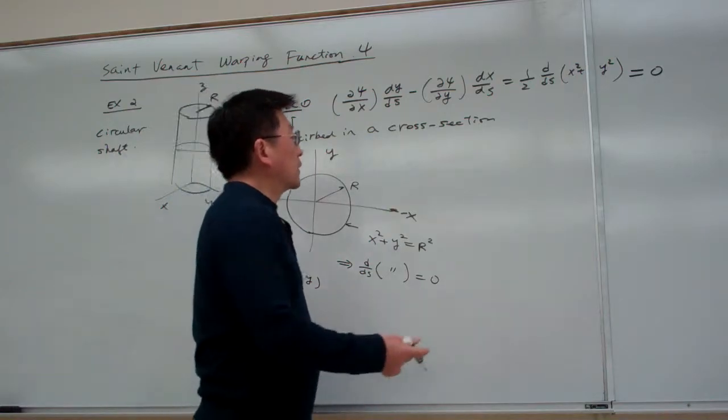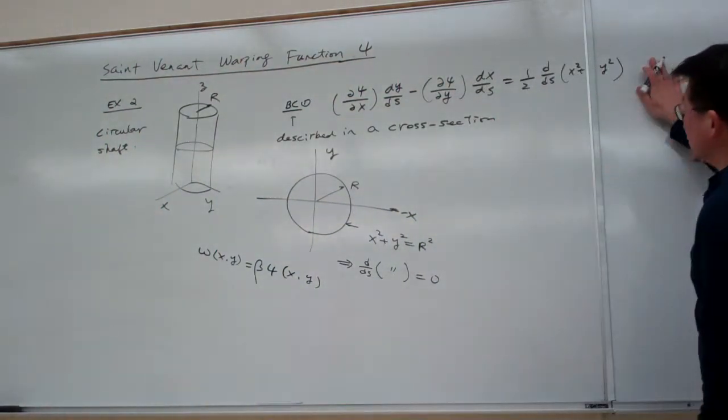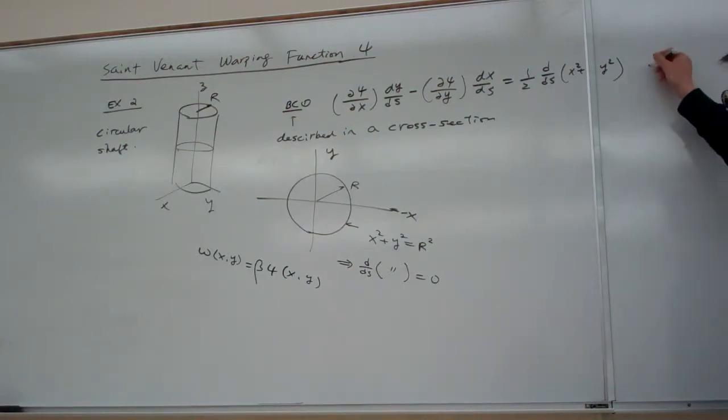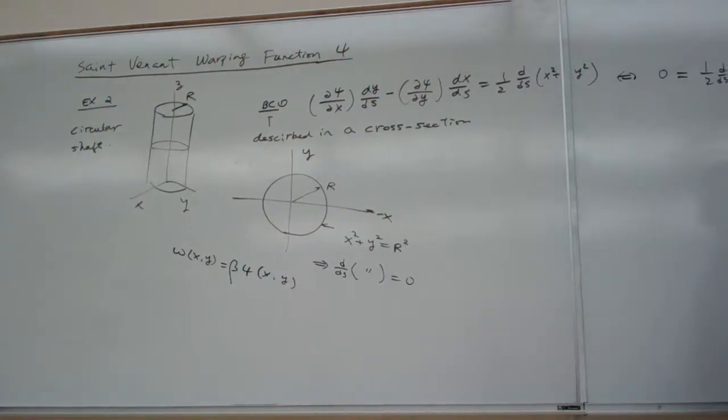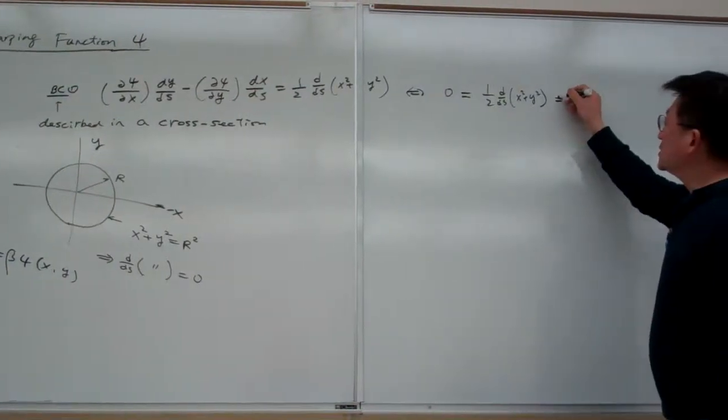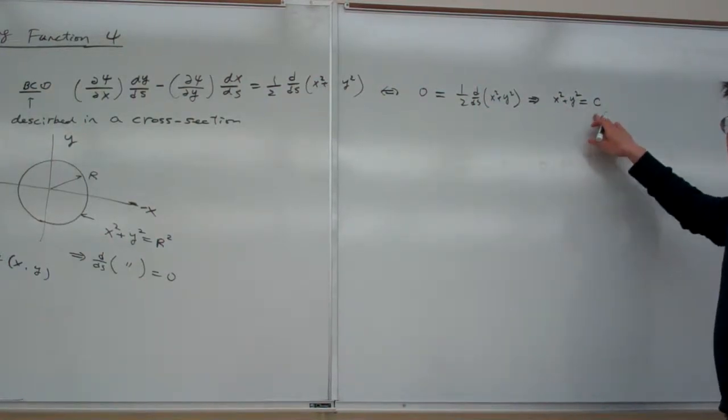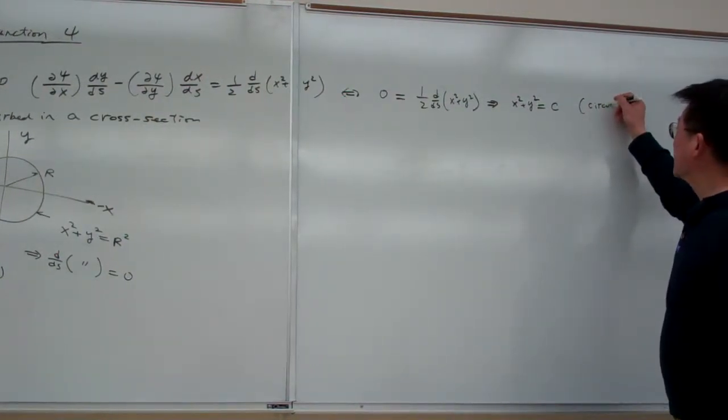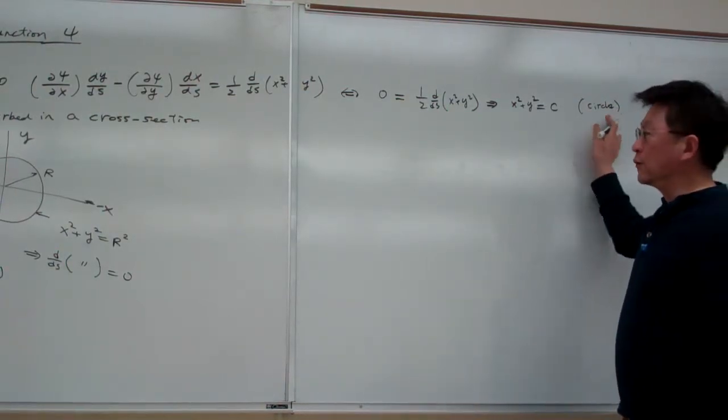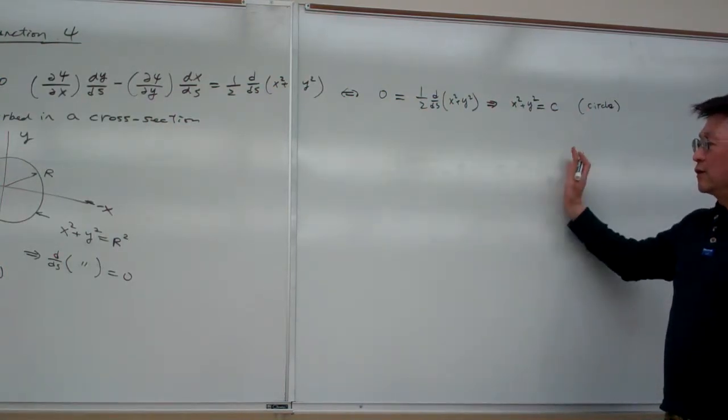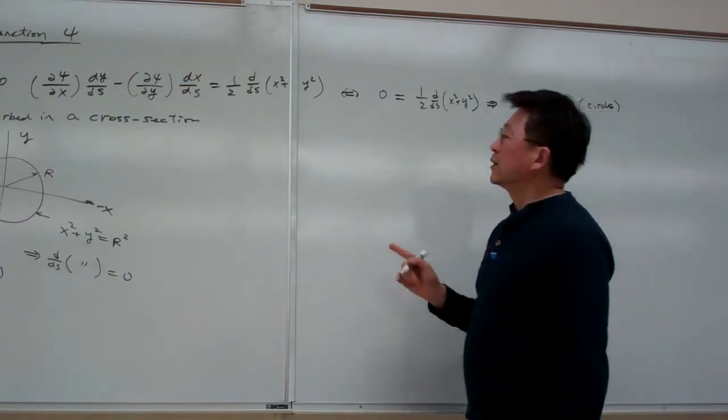Here I do the argument with this. Using these boundary conditions, if the warping function equals zero, then this equation becomes: left-hand side equals zero, right-hand side equals this. From this argument, we can deduce this one is constant. Actually, this represents a circle.